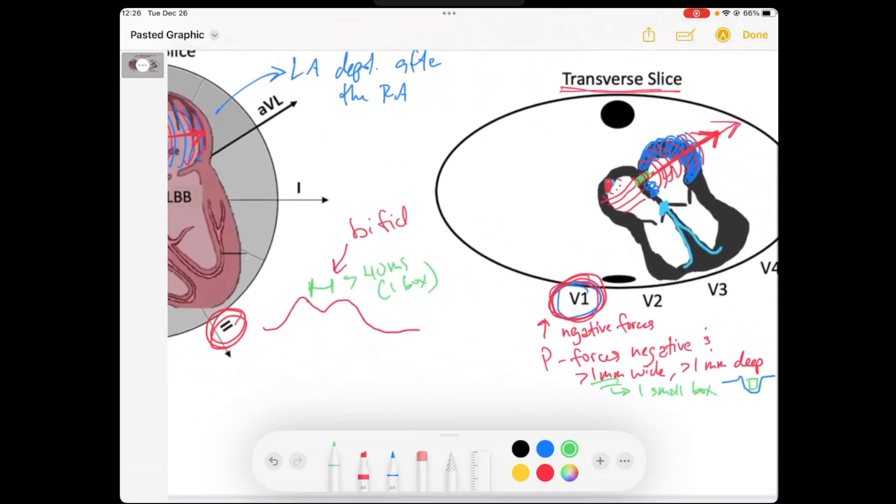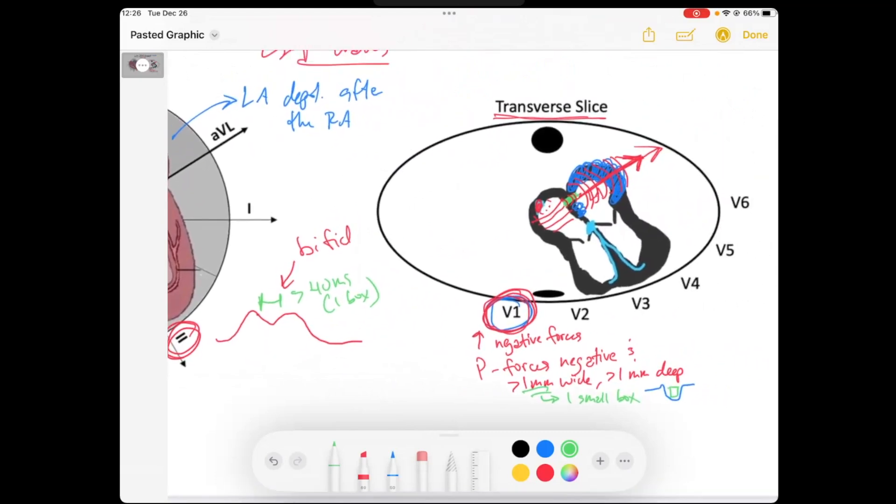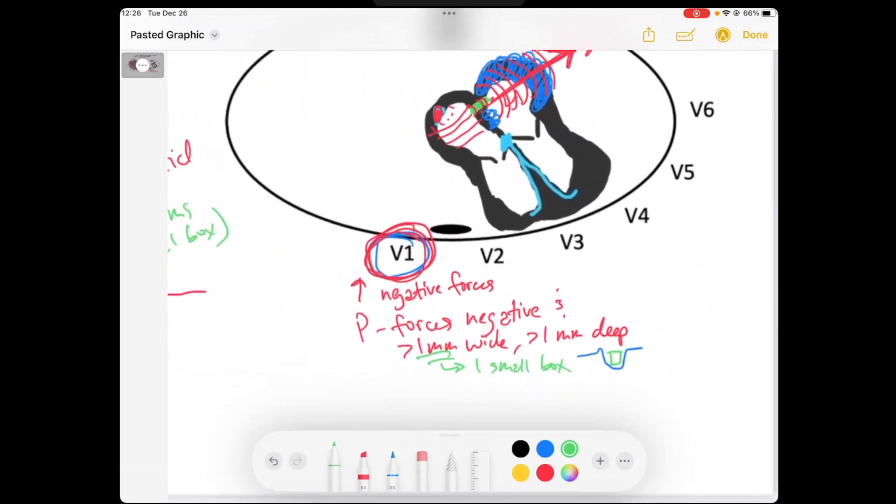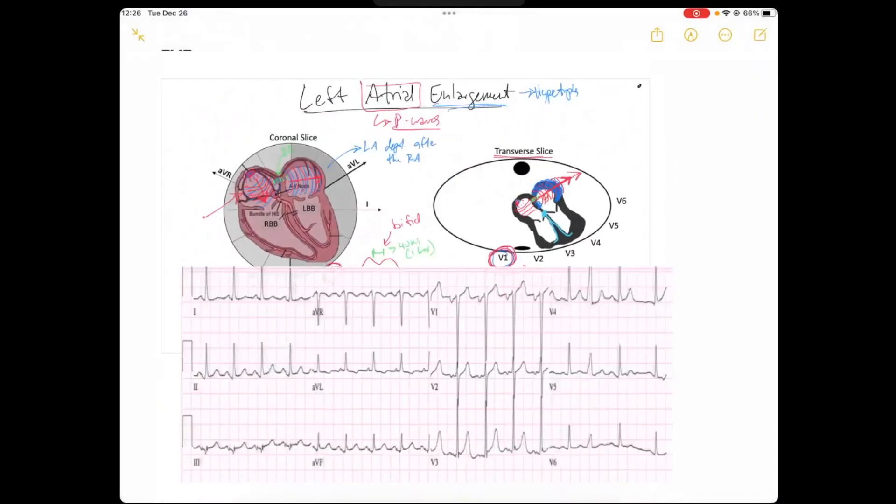However, the best is going to be this V1, where we say we've got this large negative force that is greater than one small box wide and deep. Let's take a look at an EKG that's got an example of that.